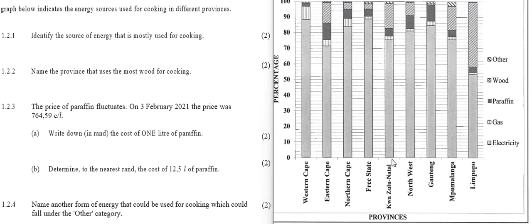For 1.2, we will be using the bar graph, the stacked bar graph on the right, to answer the questions on the left. Question 1.2.1: Identify the source of energy that is most commonly used for cooking. If we look at all these provinces, you will see that the lightly shaded bar is actually the biggest one for all the provinces. If you look at the key, that's the electricity bar. So electricity is the energy source that is mostly used for cooking.